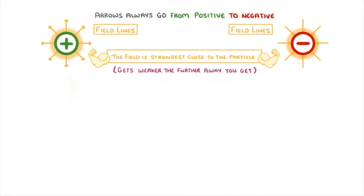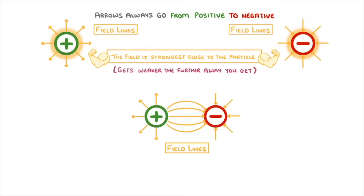We can actually show this with their field lines, by extending the field lines from the positive particle all the way over to the negative particle, because remember they always go from the positive to the negative charge.